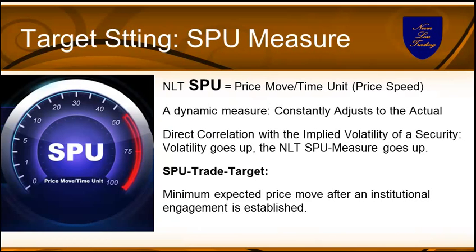First, a little reference to our Spoo measure. Spoo means the expected price move after institutional engagement in an asset. What we can expect basically is a target one where the price expands to at minimum. So at any price point with Nevelos Trading, you'll know the minimum price move that can be expected, and you also know by the chart where your stop or price adjustment level should be. With that, you can see risk and reward in relation and make a meaningful trading decision where you only take the trade when the odds are in your favor.